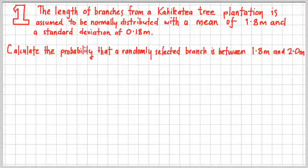So here's scenario 1. The length of branches from a Kahikatea tree plantation is assumed to be normally distributed with a mean of 1.8 metres and a standard deviation of 0.18 metres. Calculate the probability that a randomly selected branch is between 1.8 metres and 2 metres.